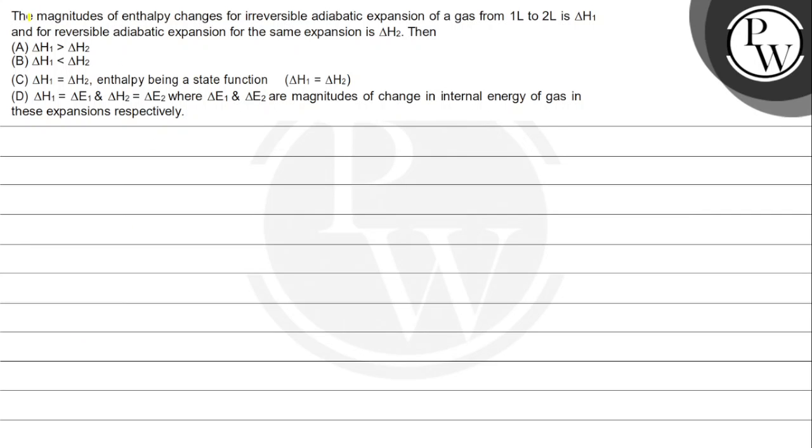Hello, let's see this question. The magnitude of enthalpy changes for irreversible adiabatic expansion of gas from 1 liter to 2 liter is ΔH₁, and for the reversible adiabatic expansion for the same expansion is ΔH₂. Then: